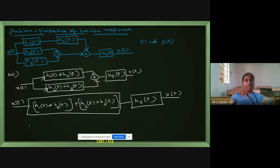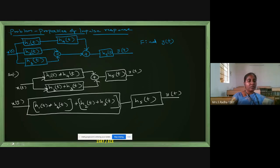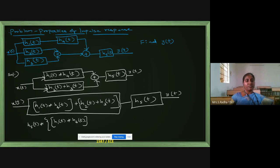This can be further made into a single block. That single block is nothing but convolution of H5 with the complete expression. So I will take a curly bracket: H1 of T convolution H4 of T as the first term, and the second term is H2 of T plus H3 of T — all inside the curly bracket — convolution with H5.